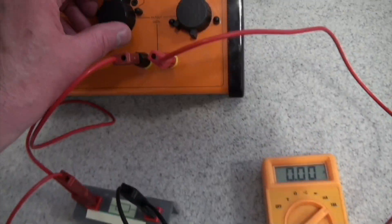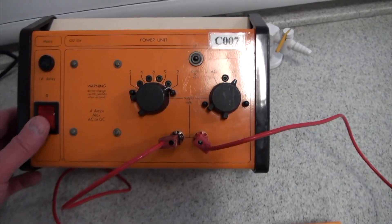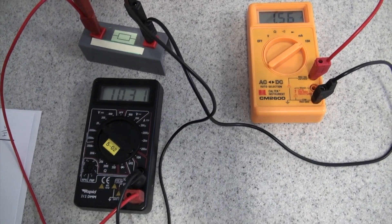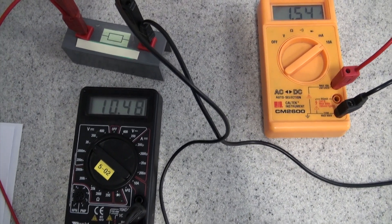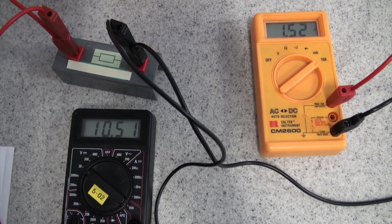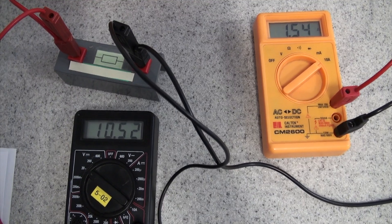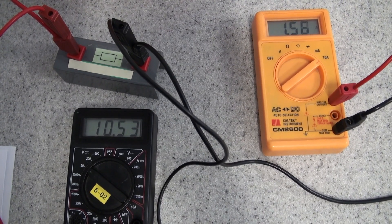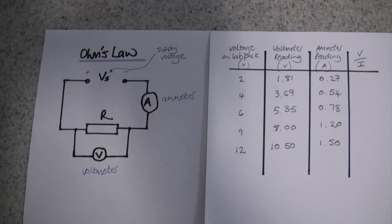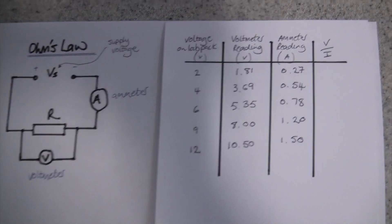And the last one. Up to 12 volts. And we'll turn it on. And 12 volts then. We're getting 10.5 and 1.56. That's kind of fluctuating there. 10.5 and 1.5. Okay, there's all our results there.